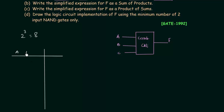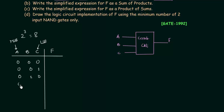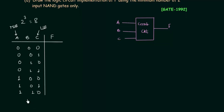A is the MSB and C is the LSB, the least significant bit. F is the output. The eight combinations are: 0,0,0 then 0,0,1 then 0,1,0 then 0,1,1 then 1,0,0 then 1,0,1 then 1,1,0 and finally 1,1,1.